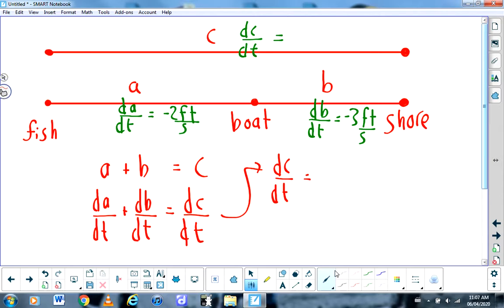You would say that dC/dt is dA/dt, which is negative two feet per second, plus dB/dt, which is negative three feet per second, which means that dC/dt is negative five feet per second.